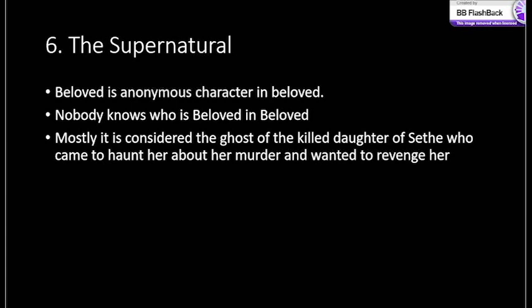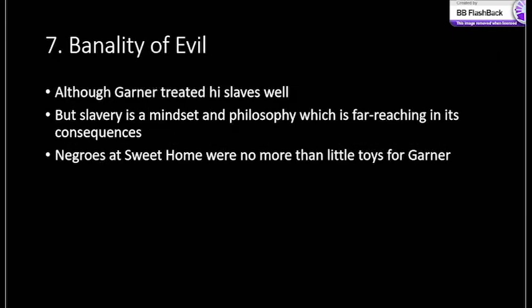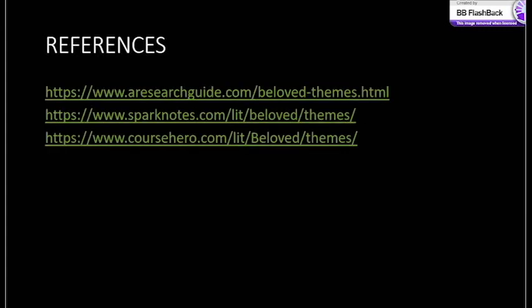The supernatural is also evident in the novel. Beloved is an anonymous character — nobody knows if she is a ghost or a human being. It is mostly considered that she is the ghost of Sethe's murdered daughter, who came to haunt her and seek revenge. Although Garner treated his slaves relatively well, slavery is a mindset and philosophy with far-reaching consequences. No matter how kind the master is, they will not consider slaves normal human beings — as you can see in that slide — slaves are always subhuman in this system.